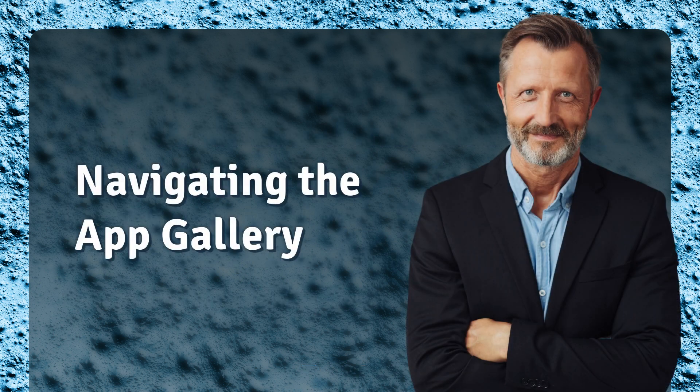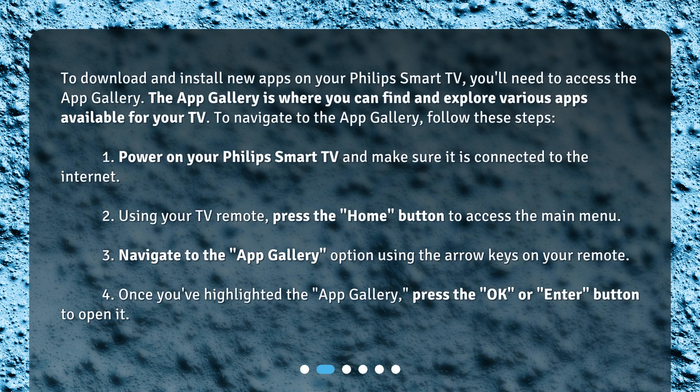Navigating the App Gallery. To download and install new apps on your Philips Smart TV, you'll need to access the App Gallery. The App Gallery is where you can find and explore various apps available for your TV. To navigate to the App Gallery, follow these steps.